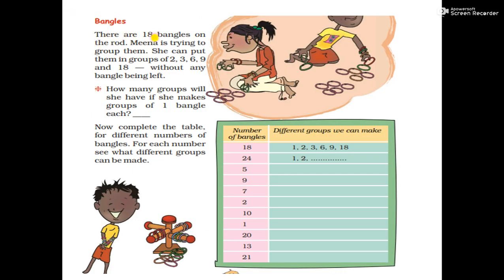Bangles. There are 18 bangles on the rod. Minah is trying to group them. She can put them in groups of 2, 3, 6, 9, and 18. This is because all these numbers can divide 18 — so 18 is a multiple of 2, 3, 6, 9, and 18.